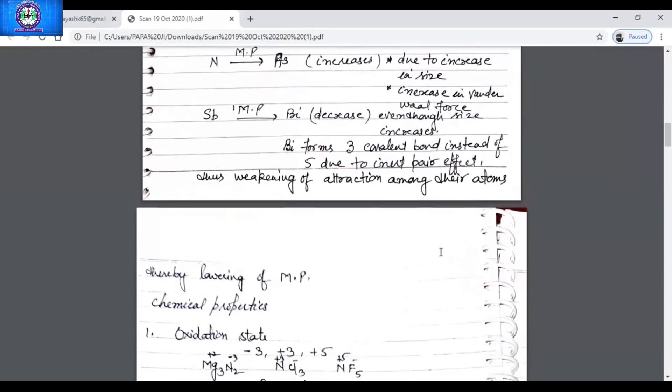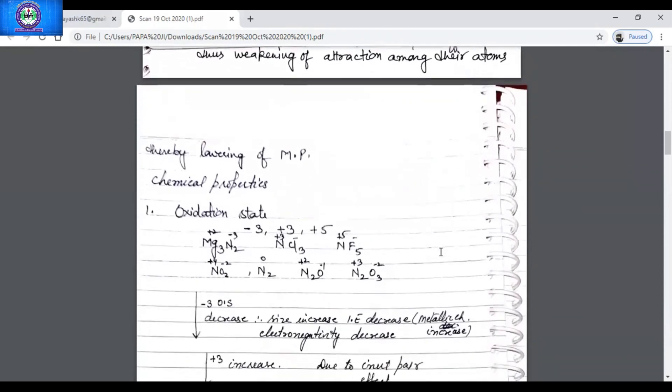Then is chemical properties. The first chemical property we will discuss here is the oxidation state. Oxidation states shown by group 15 are minus 3, plus 3, and plus 5. Here I have written few examples also. Nitrogen shows oxidation state from minus 3 to plus 5 in its compounds. Like in NH3 it is minus 3, in N2H4 minus 2, in NH2OH minus 1, N2 is 0, N2O plus 1, NO plus 2, HNO2 plus 3, N2O4 plus 4, and in HNO3 it is plus 5.